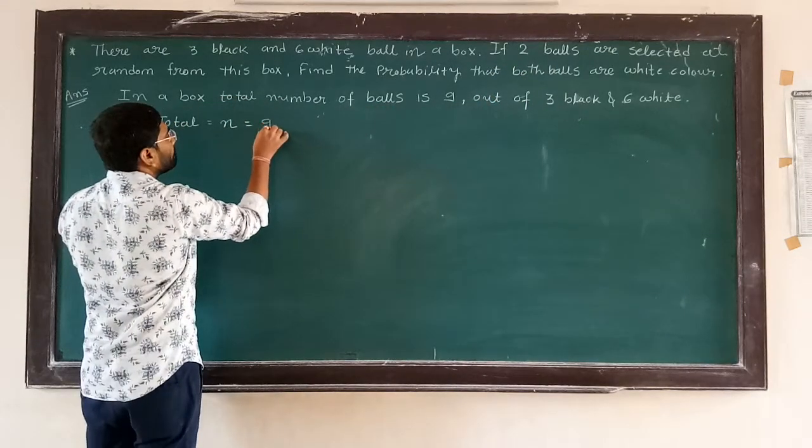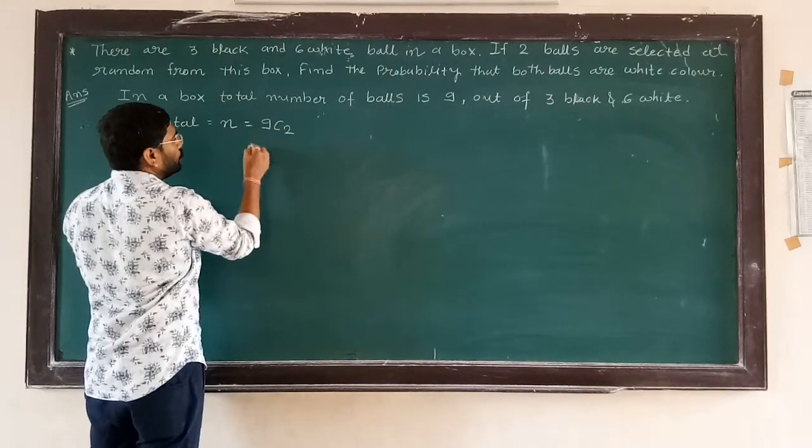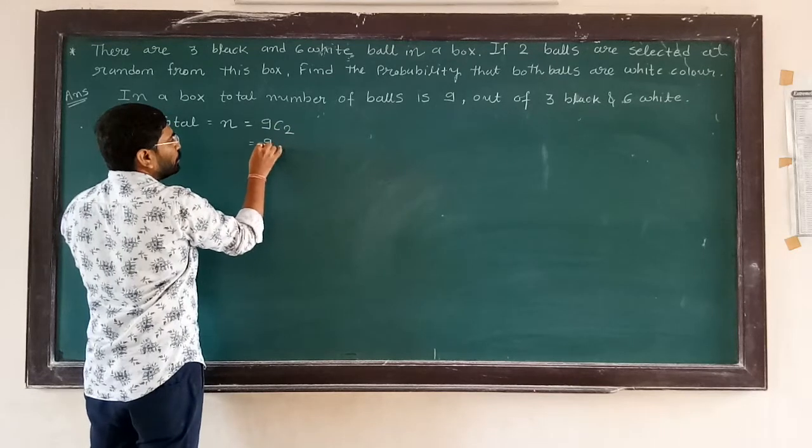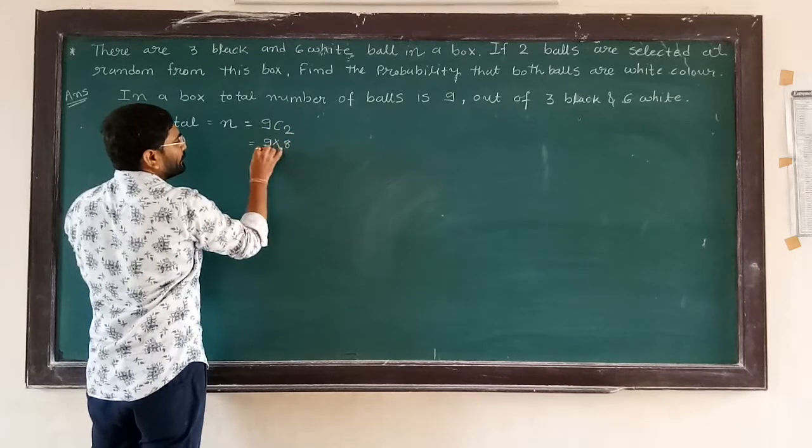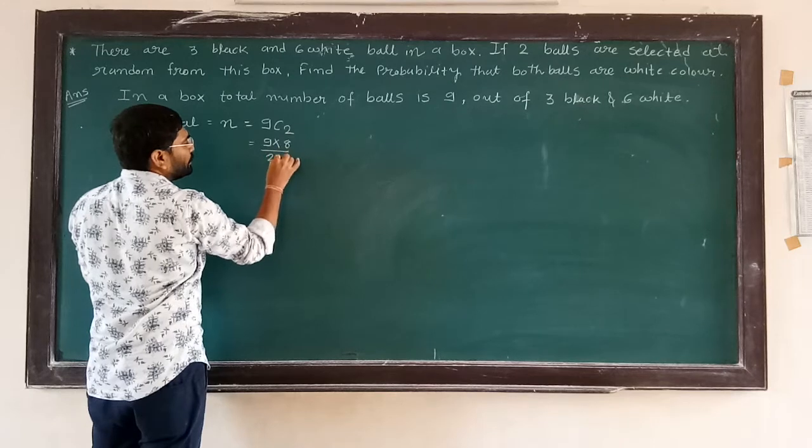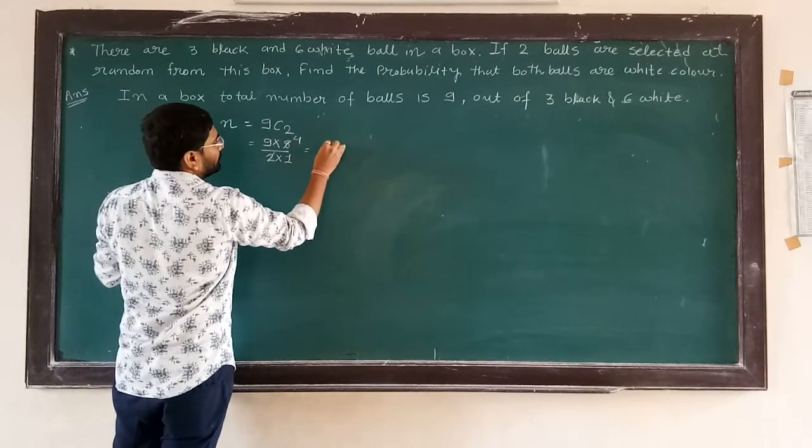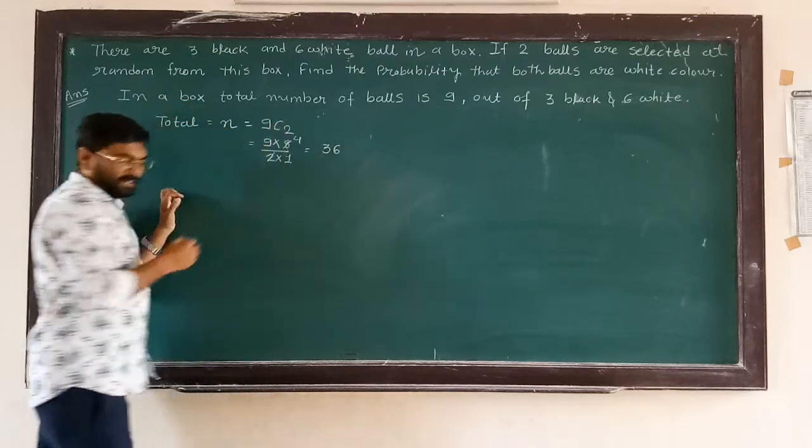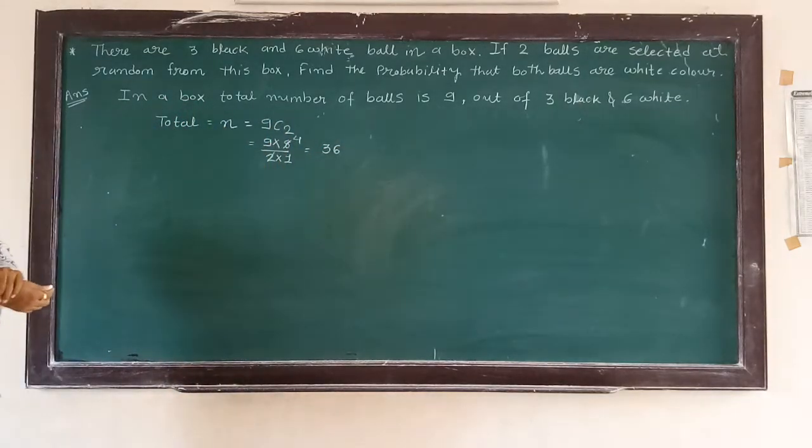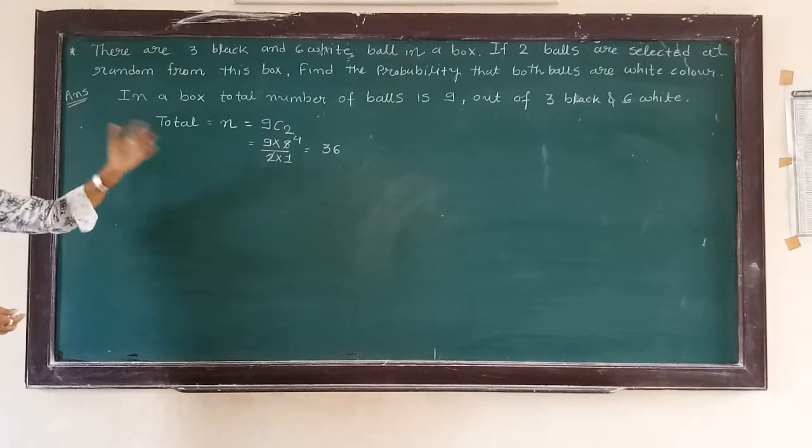9C2 is equal to 9 into 8 upon 2 into 1, so 36 is the total number of selecting 2 balls.